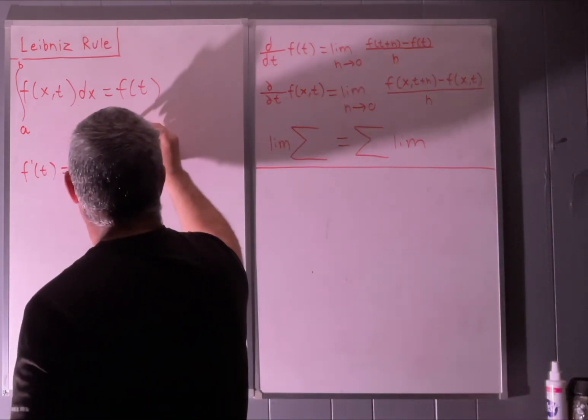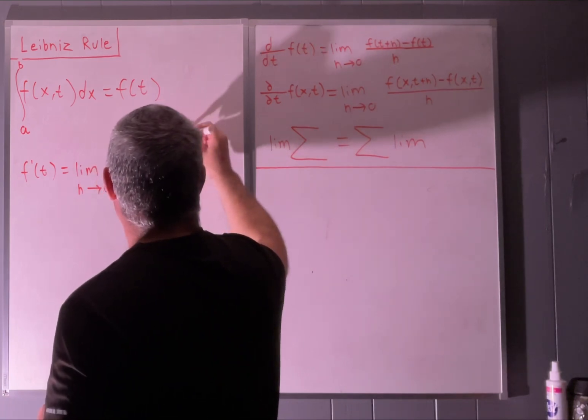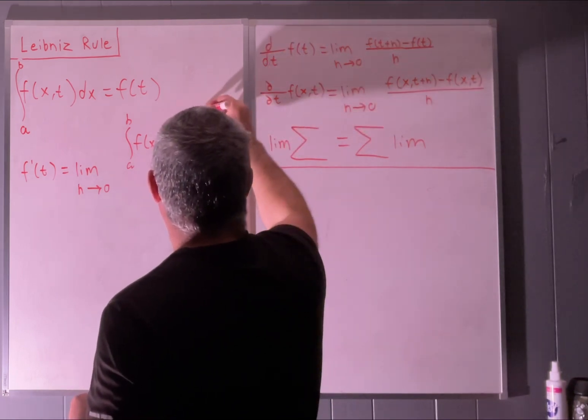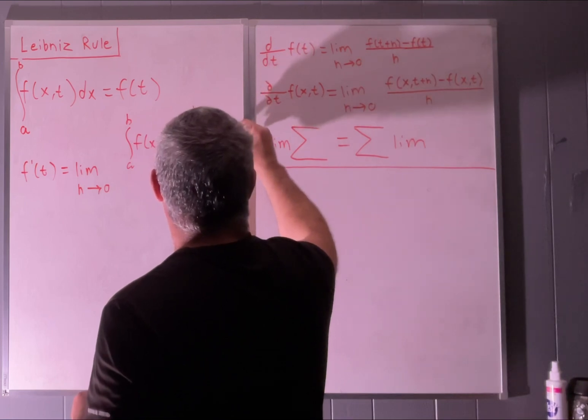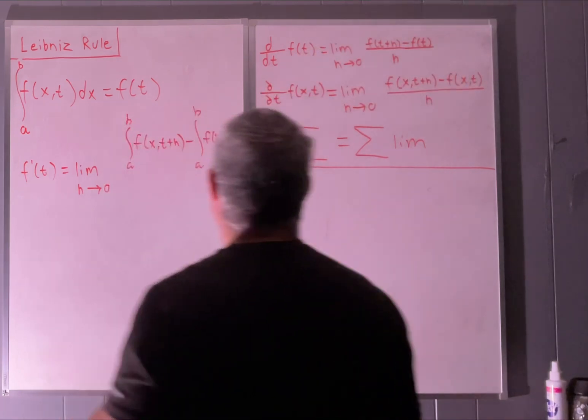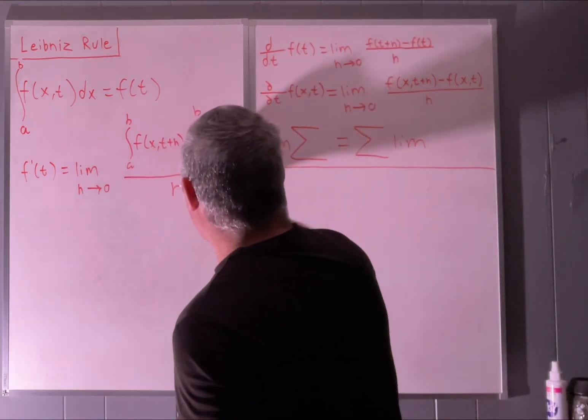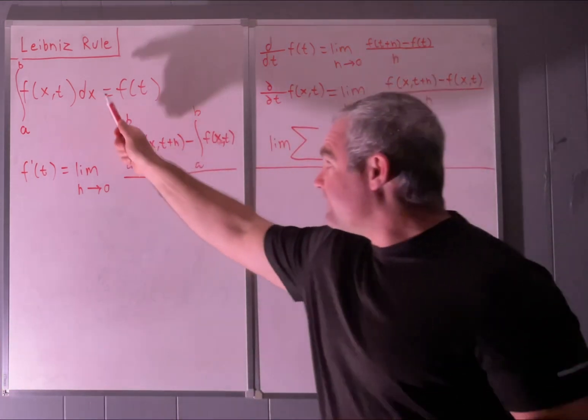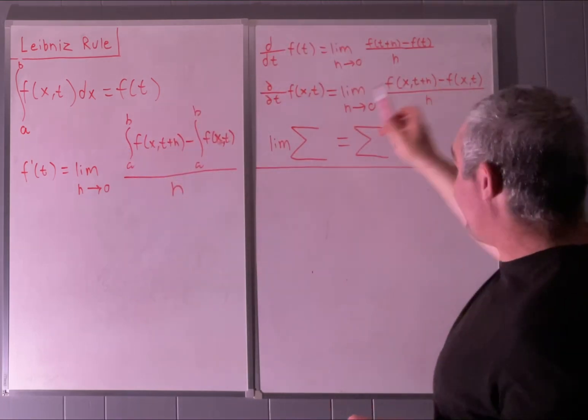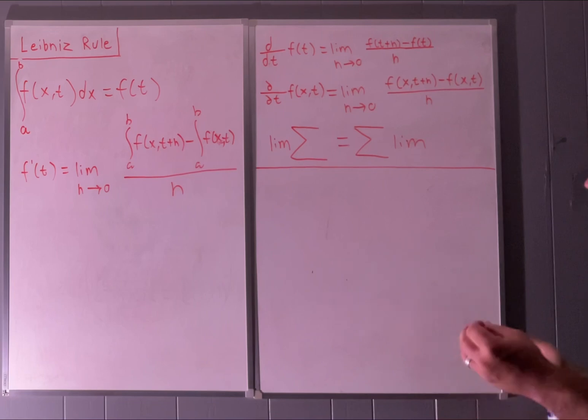Our f prime of t would equal the limit as h approaches 0 of our function of t plus h, which would be the integral from a to b of f of x comma t plus h, minus the integral from a to b of f of x and t. And I'm leaving out the dx just to save room. And of course, this would all be over h, right? That's all it is. Our function of t is this thing, and we're just taking f of t plus h, which is right here, minus f of t, which is right here, putting it over h and taking the limit as h goes to 0.